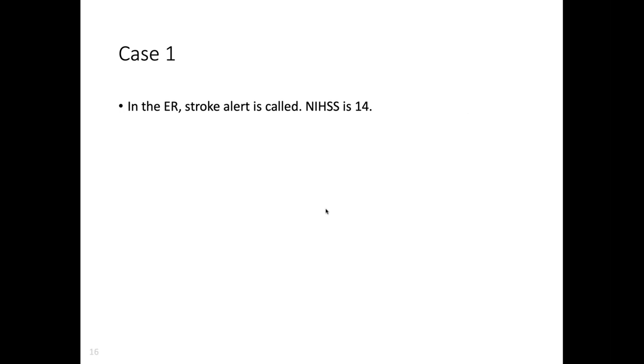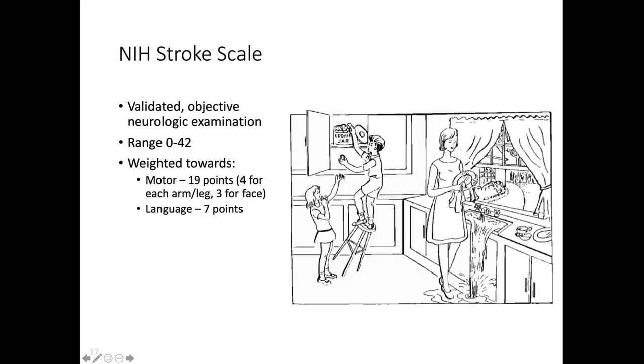EMS brings him to the ER, a stroke alert gets called and the stroke scale is 14. Let's talk about the stroke scale. It's a validated objective neurologic exam. Does it count for your whole neuro exam? Not really. But in the acute setting when you need to get information quickly, the NIH stroke scale is a great way to do it. This kitchen scene is the picture people think about most - you ask a patient to describe it. Are they awake enough to answer? Do they see the mom doing dishes? Do they neglect the kids on the left side? Do they know the word cookies?